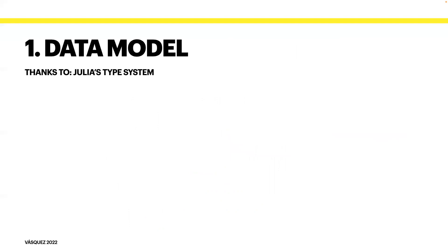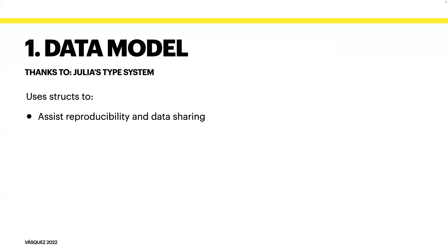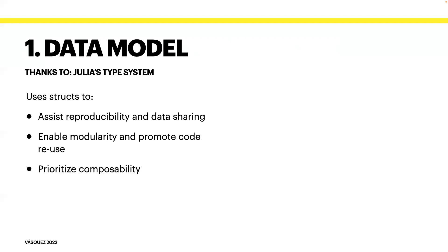The first step in any empirical effort is to clean and organize the data, and this is also true for computational experiments. The data model component of GeneDrive.jl uses structs in the Julia type system to standardize the organization of information and encode relationships between model inputs. By enforcing consistency in data specification across computational experiments, the data model facilitates reproducibility and data sharing. The modularity it enables promotes code reuse as different research questions or focal areas are studied, so required inputs can be swapped out accordingly.